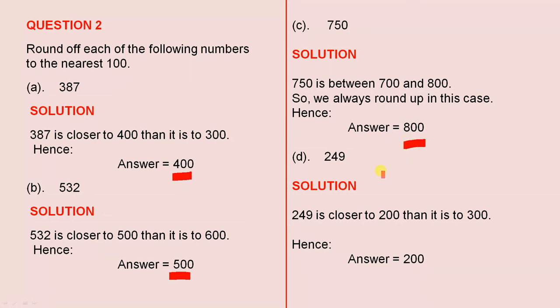The next one is 249. 249 is closer to 200 than it is to 300, it is just that little bit closer. Hence, 249 to the nearest 100 is 200.